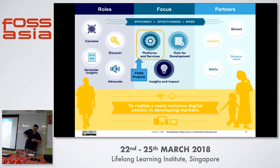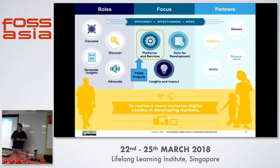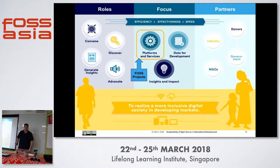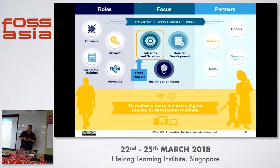That's where our organization comes in. We started this organization to help bring together people who are already working in this space — we didn't want to reinvent something ourselves, but wanted to focus on three areas: how software and technology is being used (what we call platforms and services), how open data is being used by these organizations, and what people are doing with that data and those tools (what we call insights and impact). We do that by working with private donors, governments, private sector organizations, and corporations — basically anyone interested in improving this space.